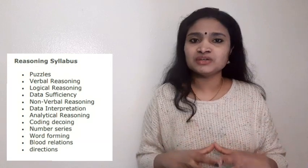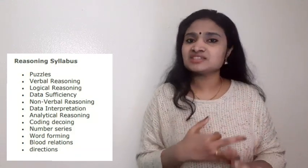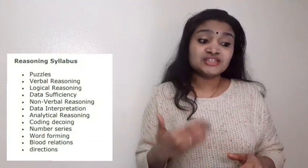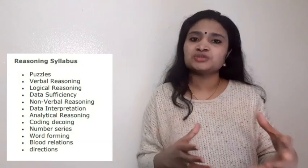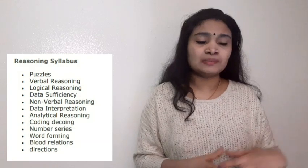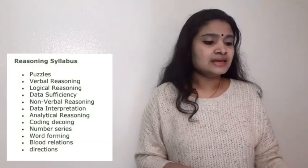Now let us see the detailed syllabus for electrical and electronics branches, starting with the generic area. From reasoning, the important topics are: puzzles, verbal reasoning, logical reasoning, data sufficiency, data interpretation, analytical reasoning, coding and decoding, number series, word forming, code forming, blood relations, and directions. These are the most important reasoning topics.